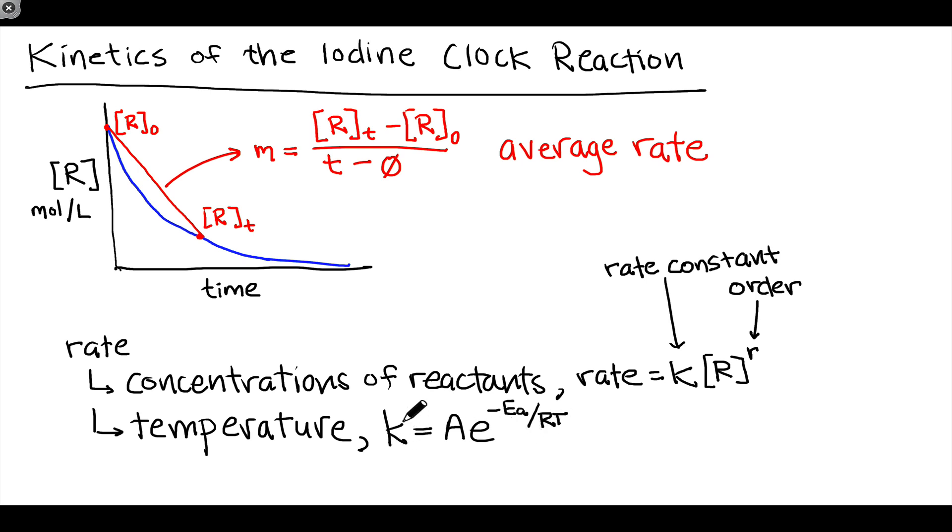If we plot K as a function of temperature, we'll see that the rate constant generally increases with temperature by an amount that depends on the activation energy. The activation energy represents an energetic barrier for the reaction to take place. So the higher that barrier is, the slower K increases as we increase the temperature.